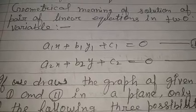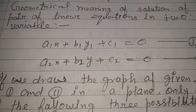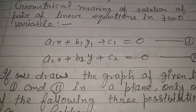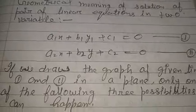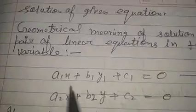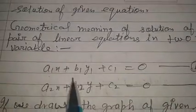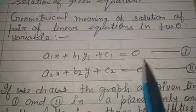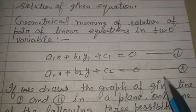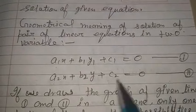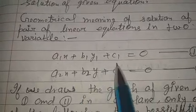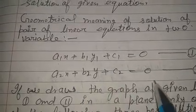पहले हम लोग pair of linear equations के geometrical meaning पर discuss करेंगे। यह हमारा standard form है: a1x + b1y + c1 = 0 और a2x + b2y + c2 = 0। यह general form of pair of linear equations है।